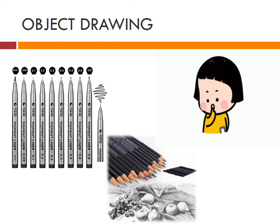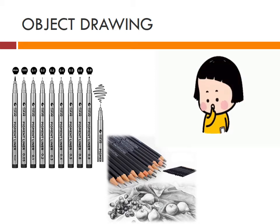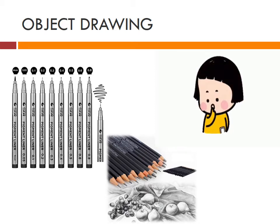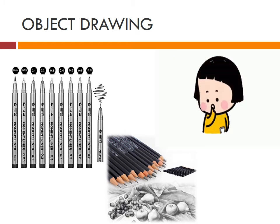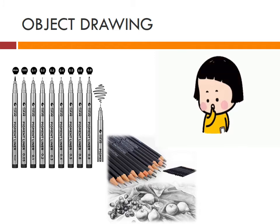There are certain steps for object drawing which includes copying an image from grid line, copying upside down image, blind contour drawing, gesture drawing, breaking image into shapes, drawing using negative space, and proportion through measurement.